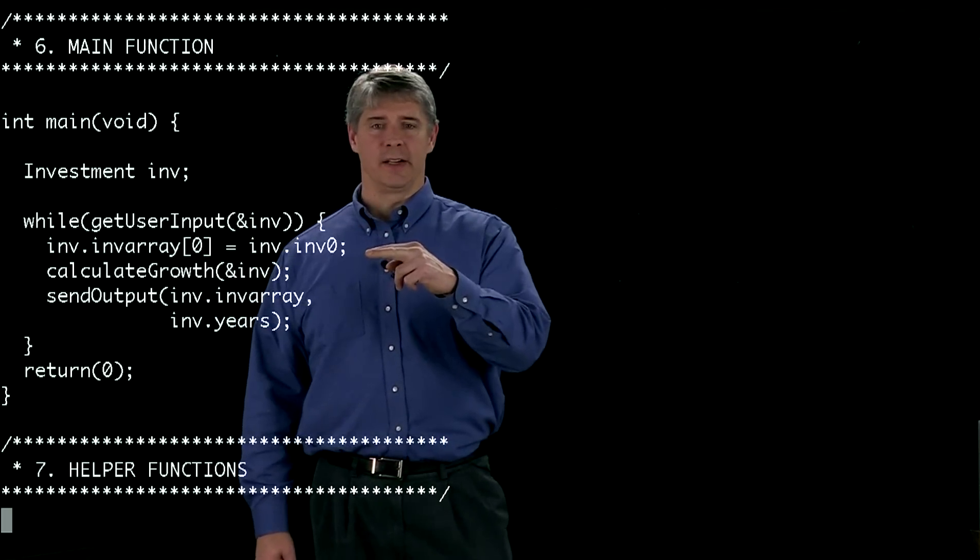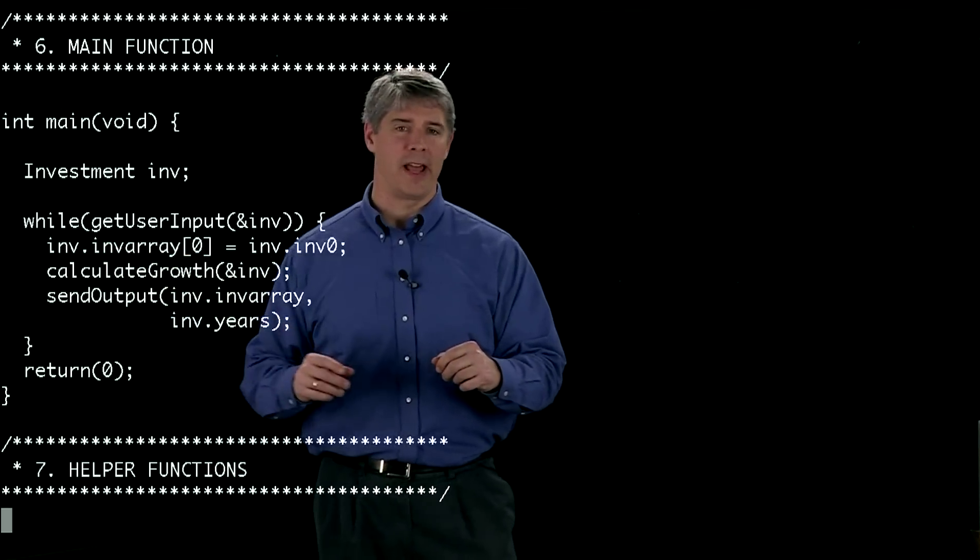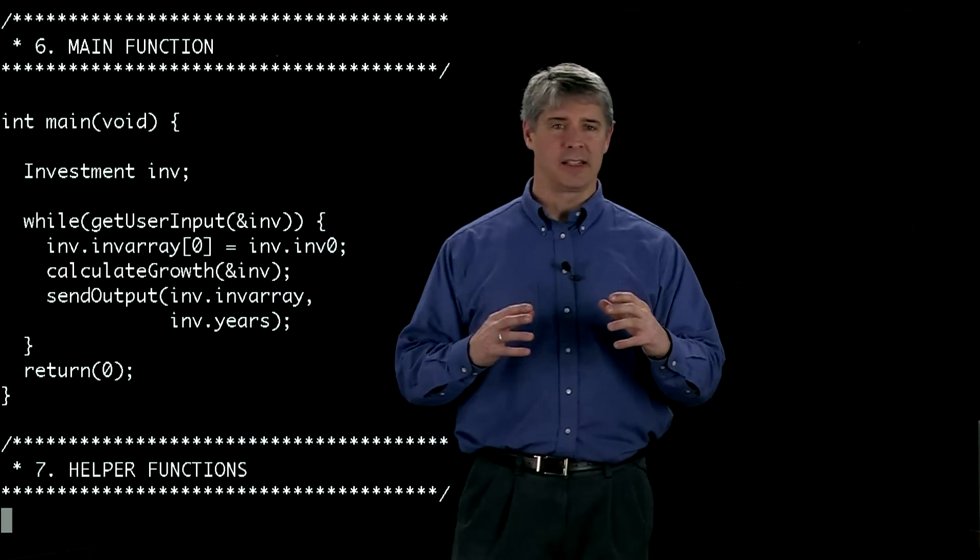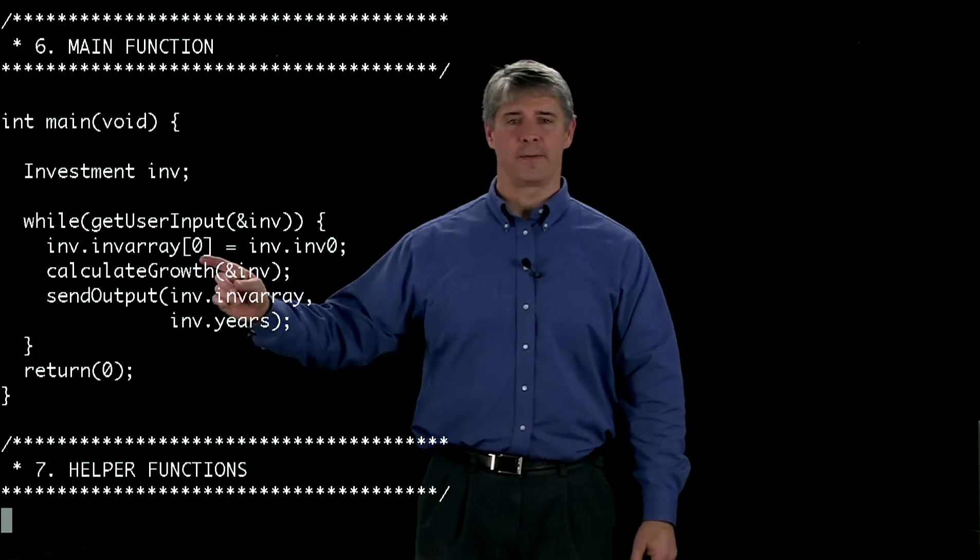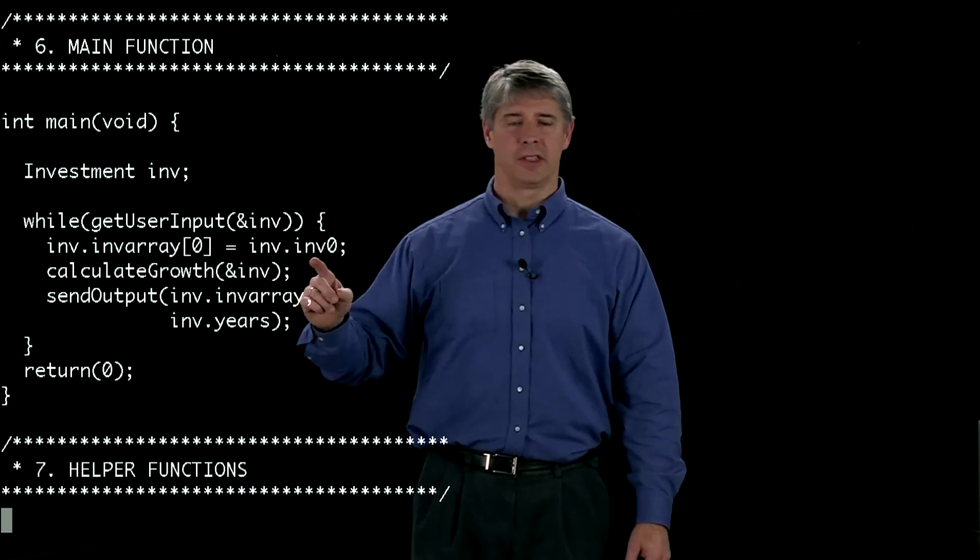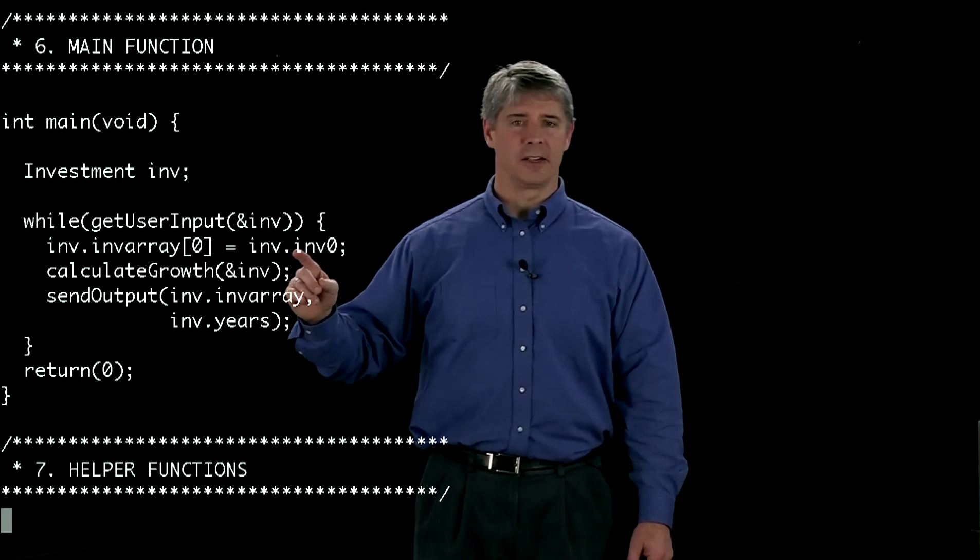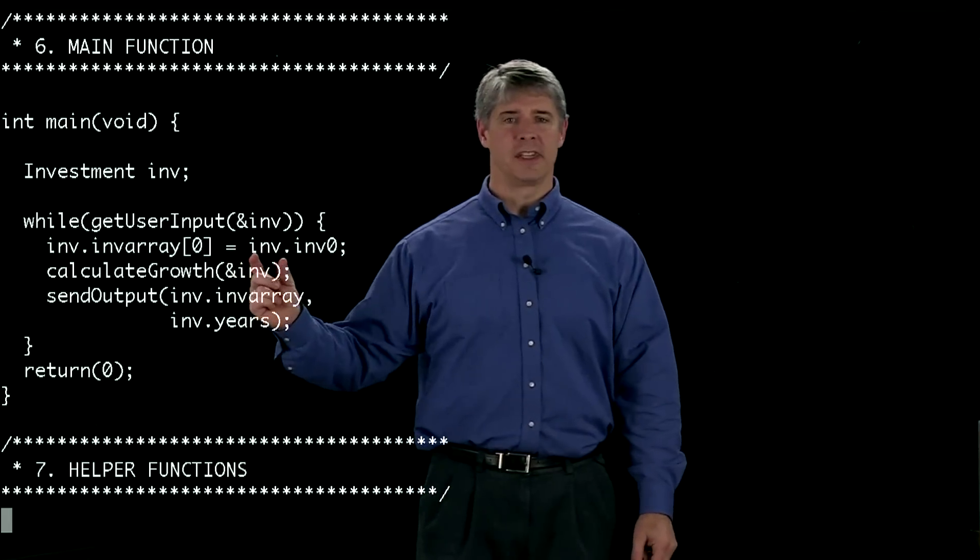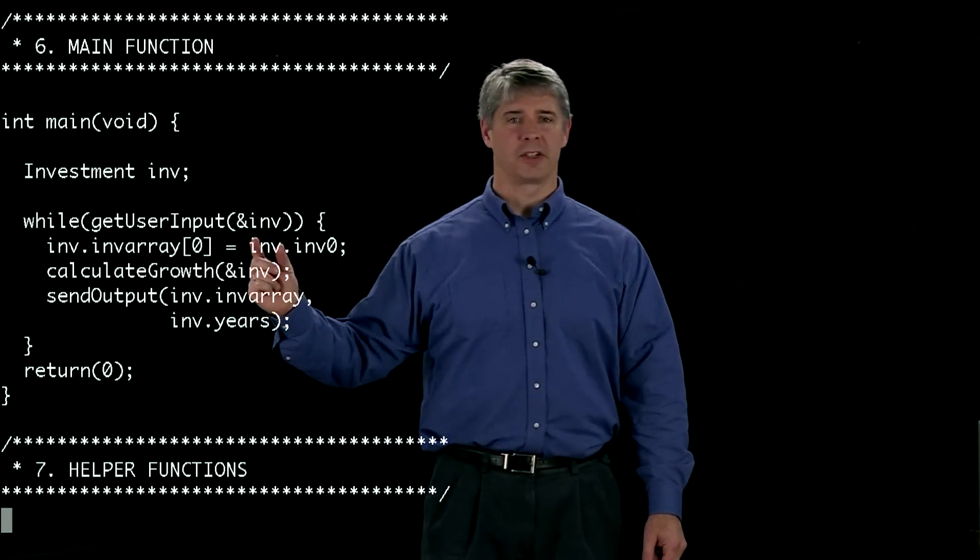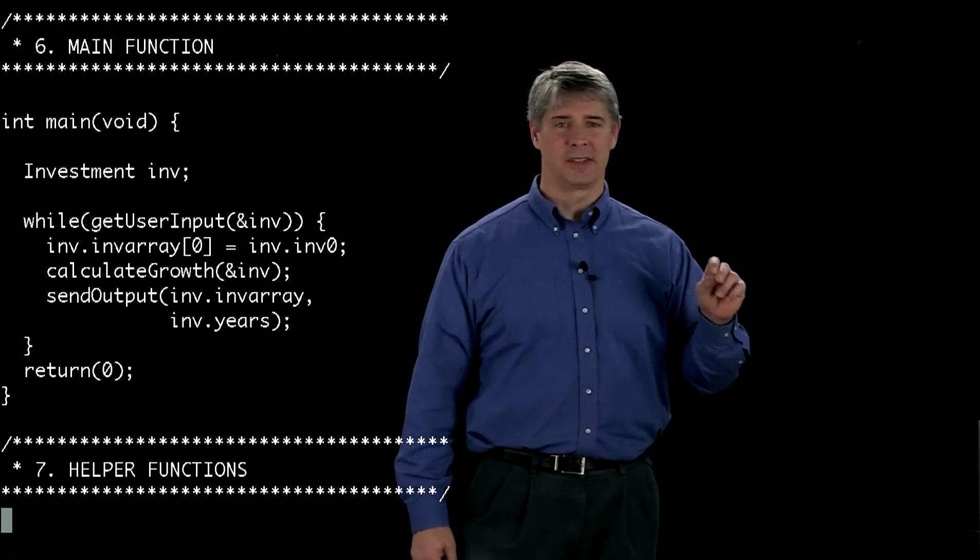In this next line here, we're going to set the first element of the array. Remember that this data type has an array of values over the years. We're going to set the first value of that equal to the initial investment that the user entered. This dot here means that we're accessing the element of the structure. So inv is the name of the variable, and it's a structure, and we want to access the inv0 element of that structure.